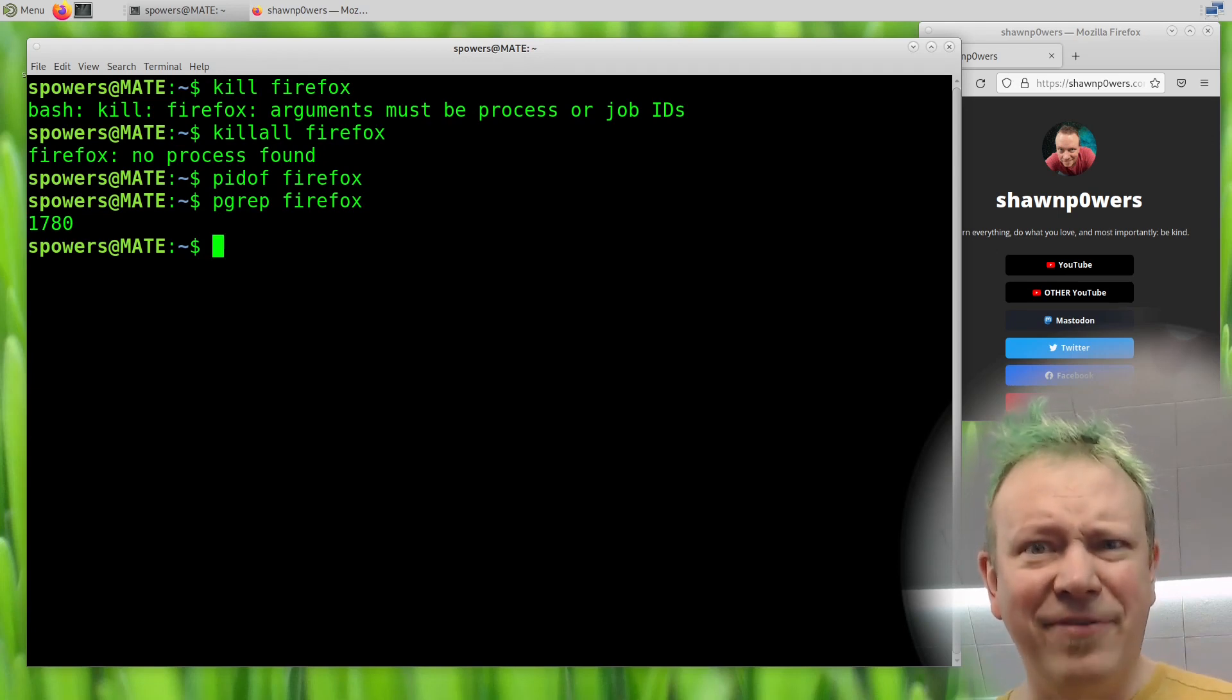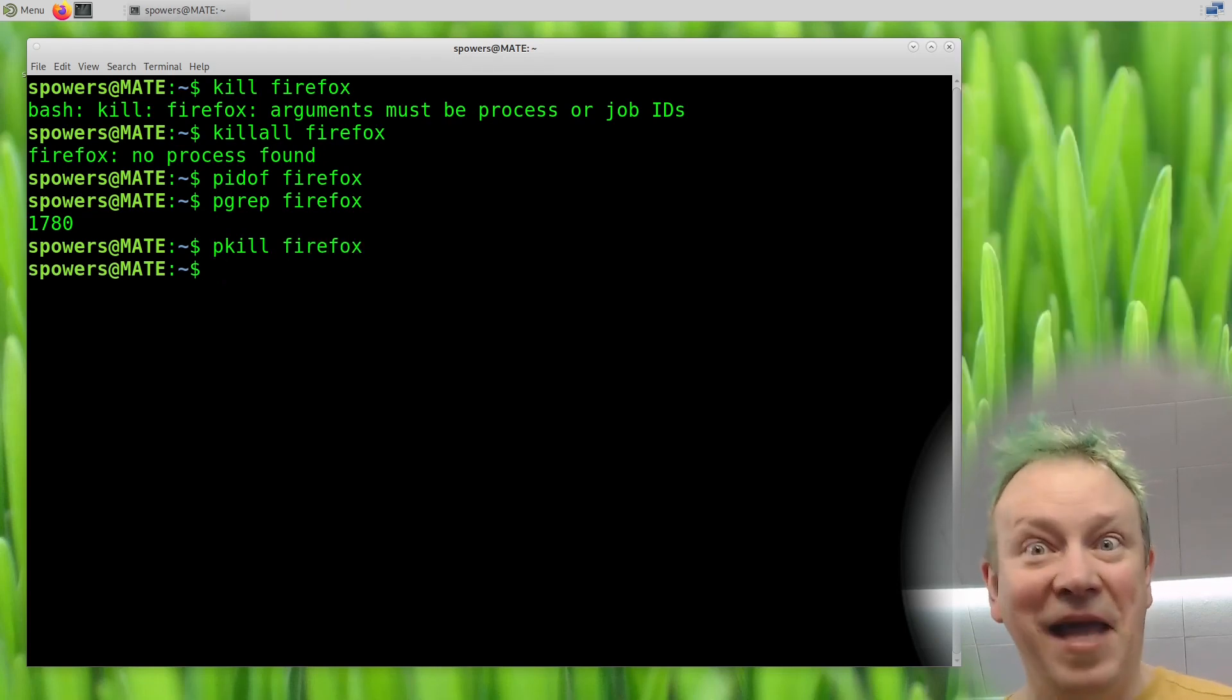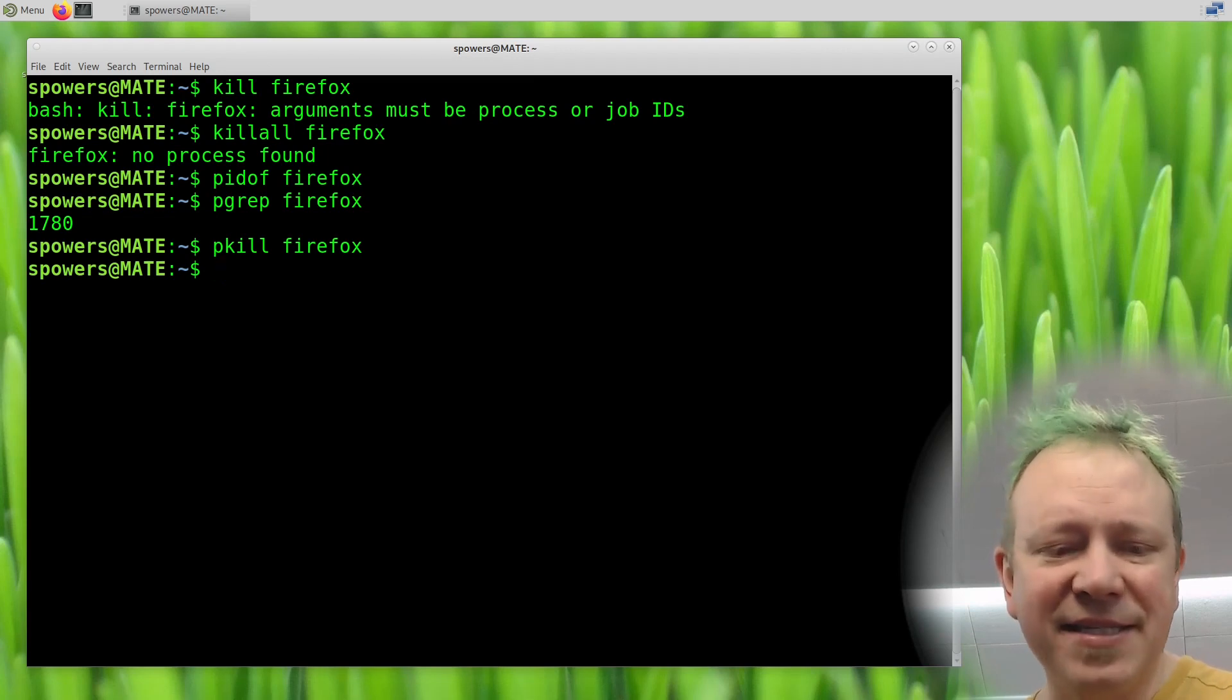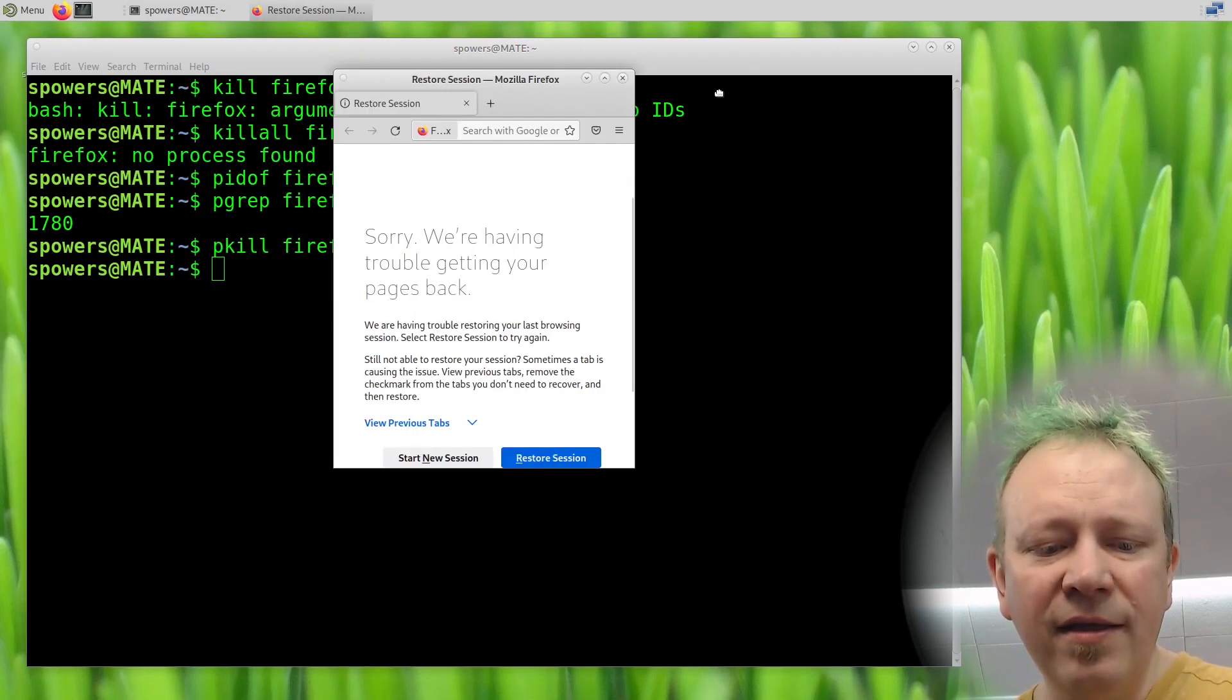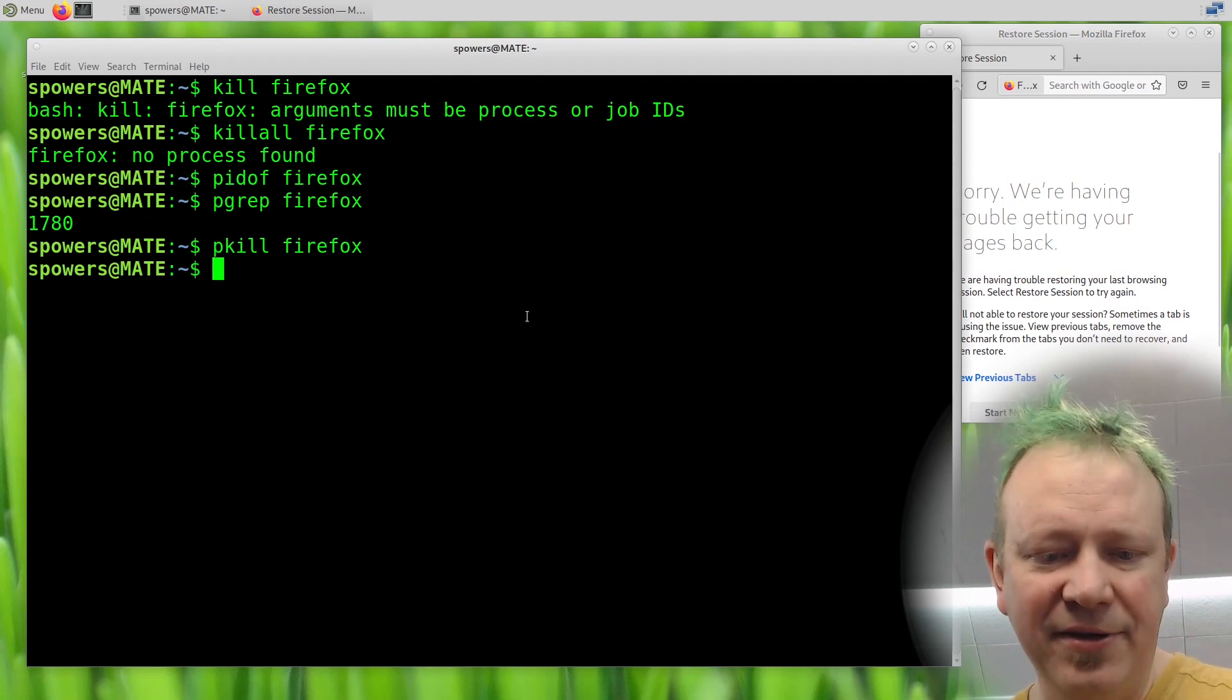So let's do pgrep Firefox. It says Firefox, it found it. Pidof didn't find it. But pgrep did. And so then I could kill it using that process ID. But I could also do pkill Firefox, and it killed it right away. So pkill can be extremely dangerous, especially if you run it with root privileges.